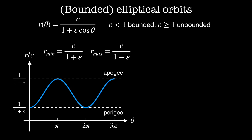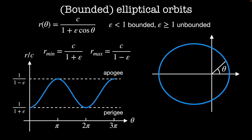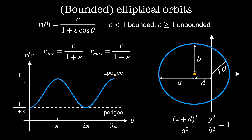The distance of closest approach is called perigee, and the distance of farthest approach is called apogee. Plotting this in polar coordinates gives us an elliptical orbit. The shape of this orbit can also be defined implicitly: a is the semi-major axis of the ellipse (half the total length), b is the semi-minor axis (half the total width), and d is the distance from the center of the ellipse to the origin. The implicit equation for our ellipse is (x + d)² / a² + y² / b² = 1.